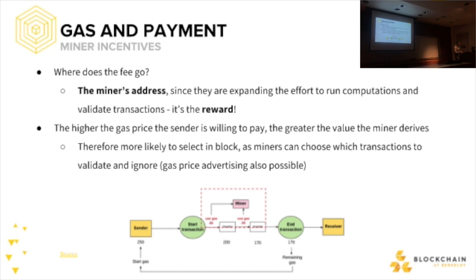Where does the fee go? The fee goes to miners, because they expend all the effort to keep the network alive — it's their reward and incentive. The higher the gas price the sender is willing to pay, the greater the value the miner derives and the less likely they are to ignore it. If you pay more in transaction fees, the miner is more enticed to put your transaction first so you get confirmed faster. For an ICO, some people will put $20,000 worth of gas to buy $500,000 worth of coins — that's a manageable cost to them. Gas prices fluctuate because everybody has different incentives in this network.